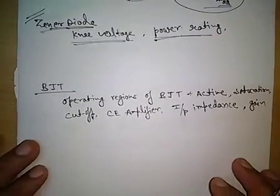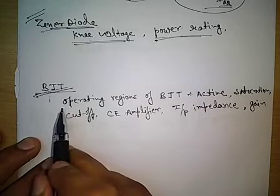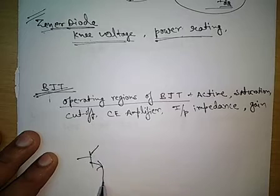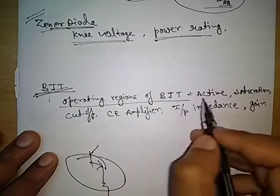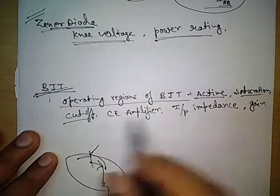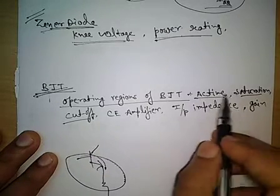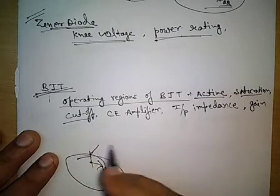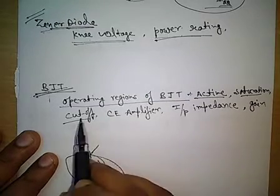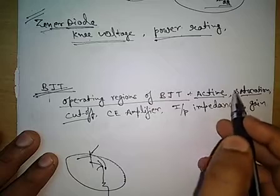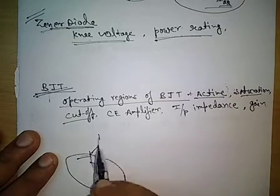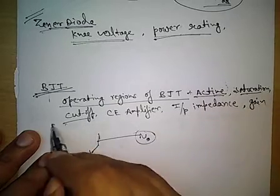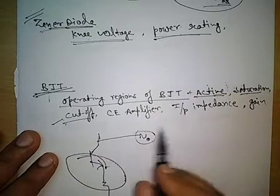Now coming to BJT — the first very important topic is the operating regions of BJT. When analyzing any circuit, we must first determine whether the BJT is in the active region, saturation region, cutoff region, or reverse saturation region. Direct questions are asked about which region the BJT is operating in, and related questions require us to first identify the operating region and then find the output voltage.